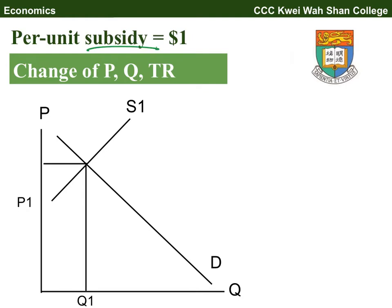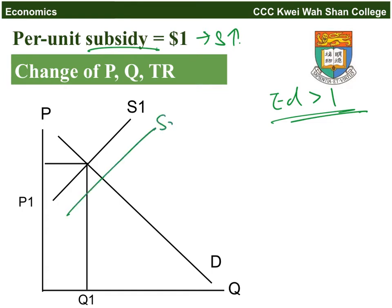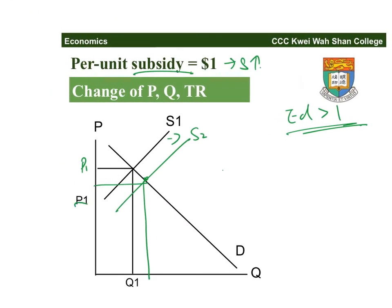With the subsidy, supply increases. We put the equilibrium point on the upper part of the demand curve where demand is elastic. The supply curve shifts right, giving a new equilibrium with price decreased and quantity increased. Looking at total revenue: the price decrease creates a minus area, but the plus area from quantity increase is larger than the minus area, so total revenue increases under elastic demand.